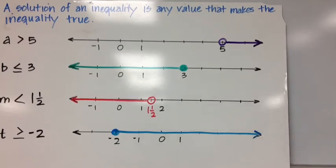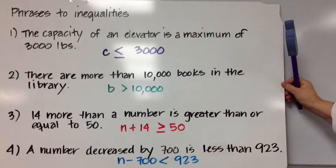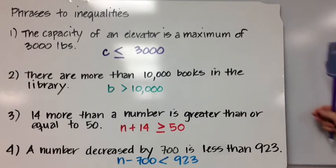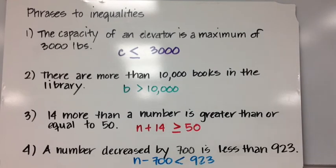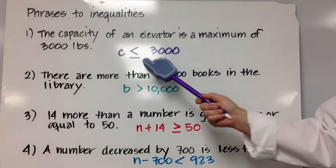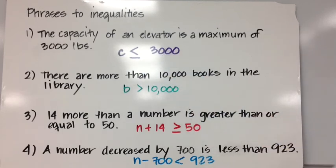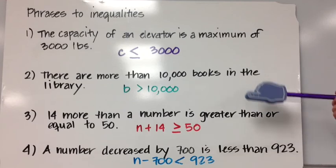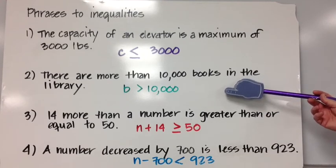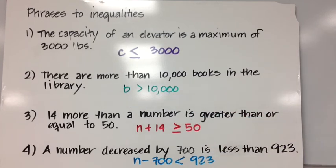Let's change some phrases to inequalities. The capacity of an elevator is a maximum of 3,000 pounds — meaning no more than 3,000 pounds. We write that as C ≤ 3,000, since 'maximum' or 'no more than' means less than or equal to. There are more than 10,000 books in the library: if B is the number of books, then B > 10,000.